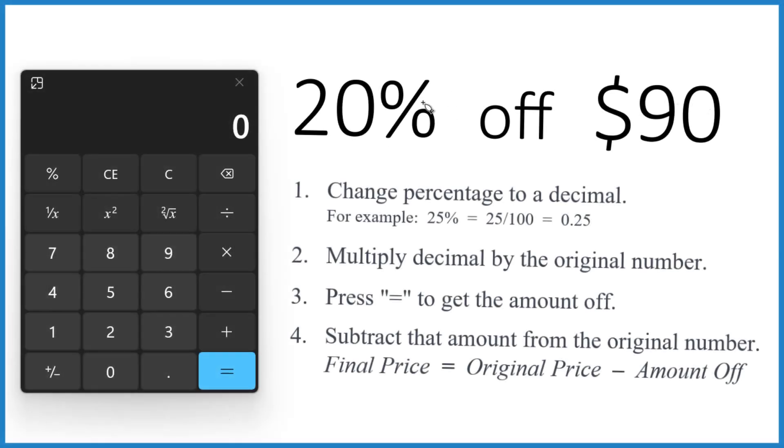Let's figure out how much we save and how much we end up paying when we take 20% off of $90. The first thing we need to do is take this 20% and convert it to a decimal.